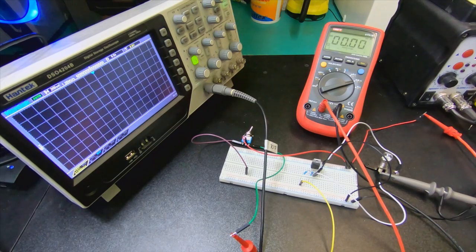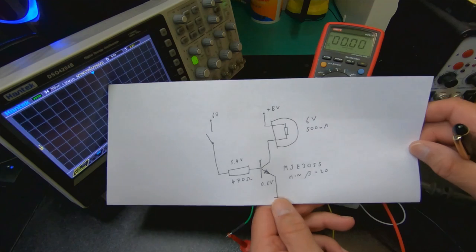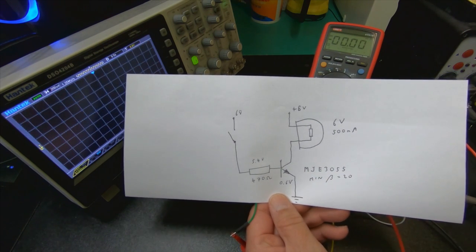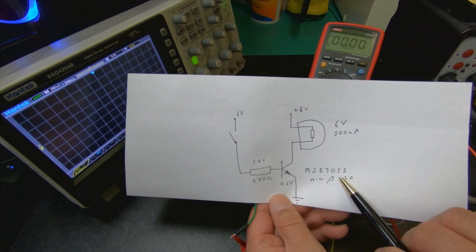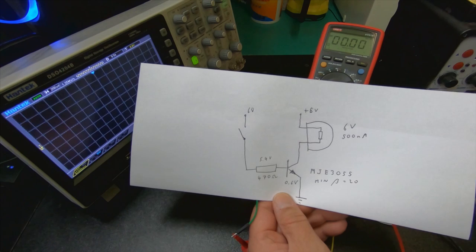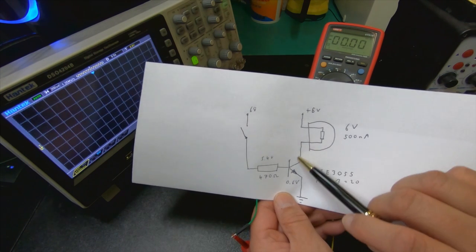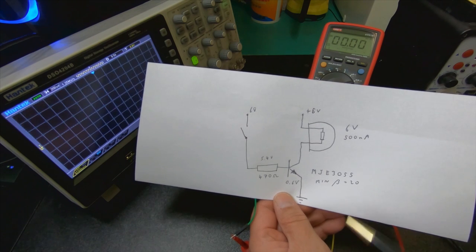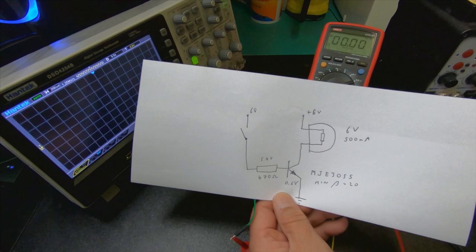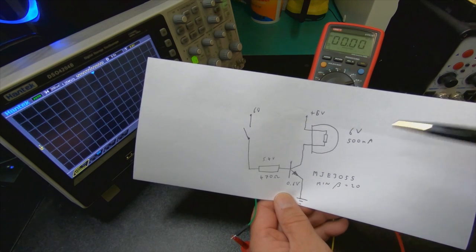So here's our simple switch circuit. We have an MJ3055 with a minimum beta of 20. That's the amplification factor of the base to emitter current compared to the collector current. And then I'm using a lamp here, which is a 6 volt lamp rated at 500 milliamps, feeding it with 6 volts just for illustration purposes.